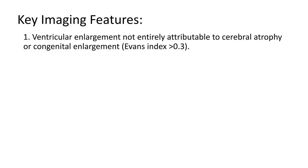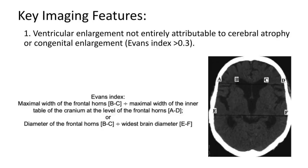The first key imaging feature required for a diagnosis of normal pressure hydrocephalus is ventricular enlargement, not entirely attributable to cerebral atrophy or congenital enlargement. The papers use the Evans index, which can be calculated by dividing B-to-C — the maximum width of the frontal horns — against A-to-D, or alternatively the frontal horns B-to-C against the widest part of the brain E-to-F. A value above 0.3 is consistent with ventricular enlargement.